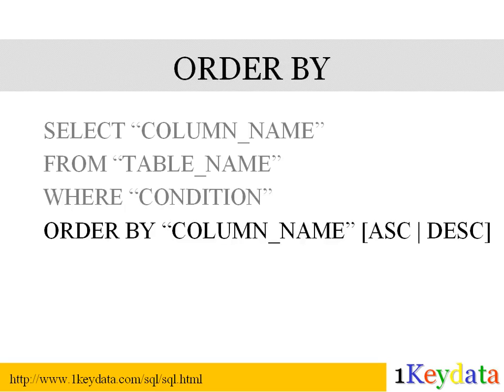Now we turn our attention to the ORDER BY keyword. Sometimes we want the output to be listed in a particular order, such as in ascending order or in descending order. To achieve this, we use the ORDER BY keyword. The syntax will be: SELECT column_name FROM table_name WHERE condition ORDER BY column_name followed by either ASC or DESC. Notice that ORDER BY is at the end of the statement because we want to specify the ordering after we have specified what data we want to get. To show results in ascending order — from A to Z or from smaller values to larger values — we add ASC at the end. To show results in descending order — from Z to A or from larger values to smaller values — we add DESC at the end. Usually, if you do not specify this, the default is ascending.